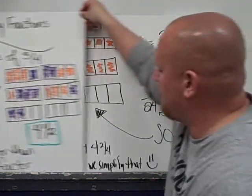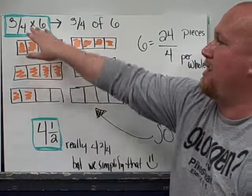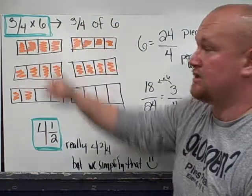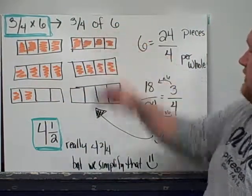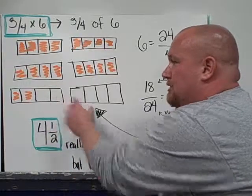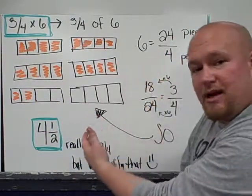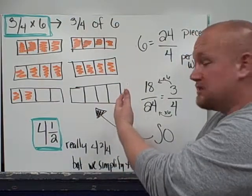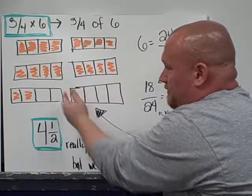I'm going to use that same problem, but I'm also going to use the commutative property to flip-flop it and now have three-fourths multiplied by six. That could be read as three-fourths of six. In this process, I drew out six wholes again. I knew that six wholes, if I keep my denominator the same, is twenty-four pieces. Twenty-four pieces at four pieces per each one of these wholes.